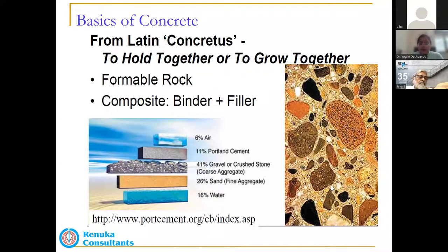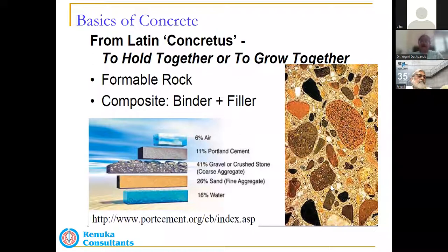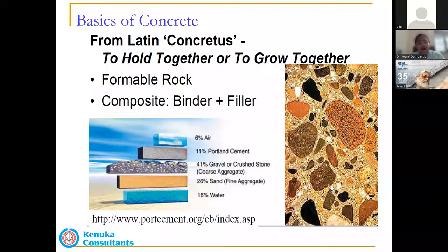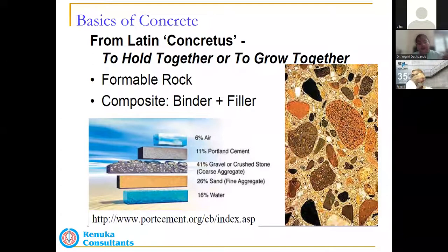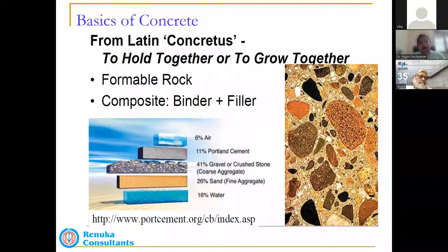Typically in concrete, there is about 11 to 14 percent cementitious materials — for normal concrete, about 11 percent Portland cement — along with 40 to 42 percent crushed stone aggregates (M1 and M2 in India), and about 25 to 28 percent fine aggregates. These proportions vary depending on the target strength, grade of concrete, and required workability. Understanding how these ingredients affect concrete properties is essential for designing concrete properly.